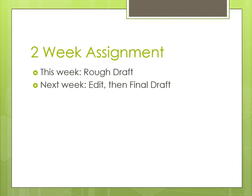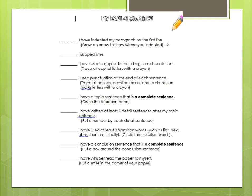Last week you did your rough draft. This week you are editing using the editing checklist, and then you're writing a final draft. For your editing checklist, you don't have to do this on a piece of paper — you could just check through if you did this in a Google document. Just look at each item and then look at your writing. I don't have to see an edited writing piece. All I need to see is the final draft this week.